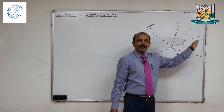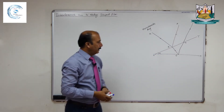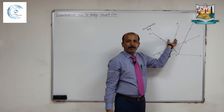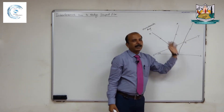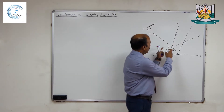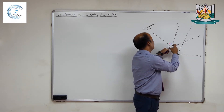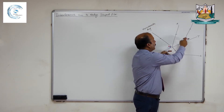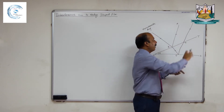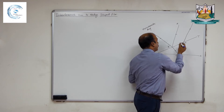Dark and bright bands appear at different thicknesses of the wedge-shaped film, and the fringes can be seen from the upper side using a spectrometer. Whether we get a bright or dark fringe is decided by the path difference between rays Bx and DY. Let us now find that path difference.